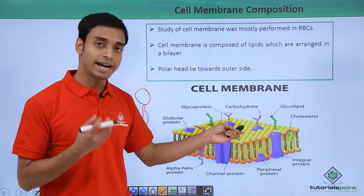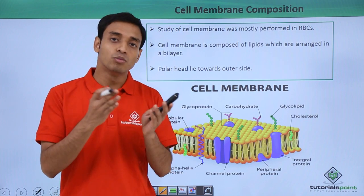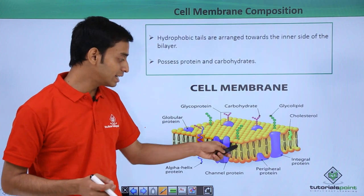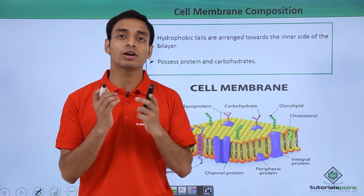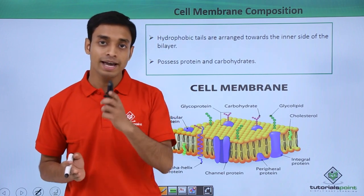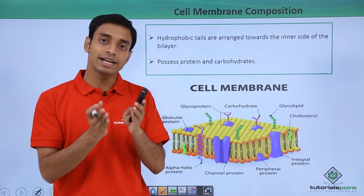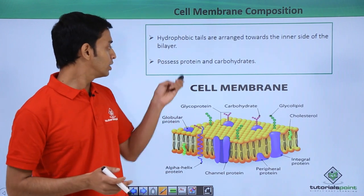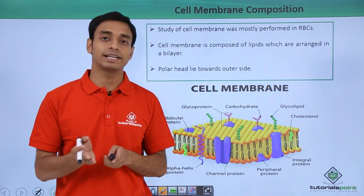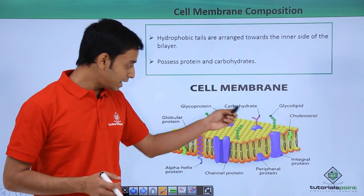Based on this, the lipids are arranged in a bilayer. The water-loving head regions, which are hydrophilic, lie outside because the outer environment has more probability of interacting with aqueous environments. The inner layer tails are hydrophobic — they do not like water — so they are protected inside the bilayer, forming the bilayer structure with polar heads on the outer side.